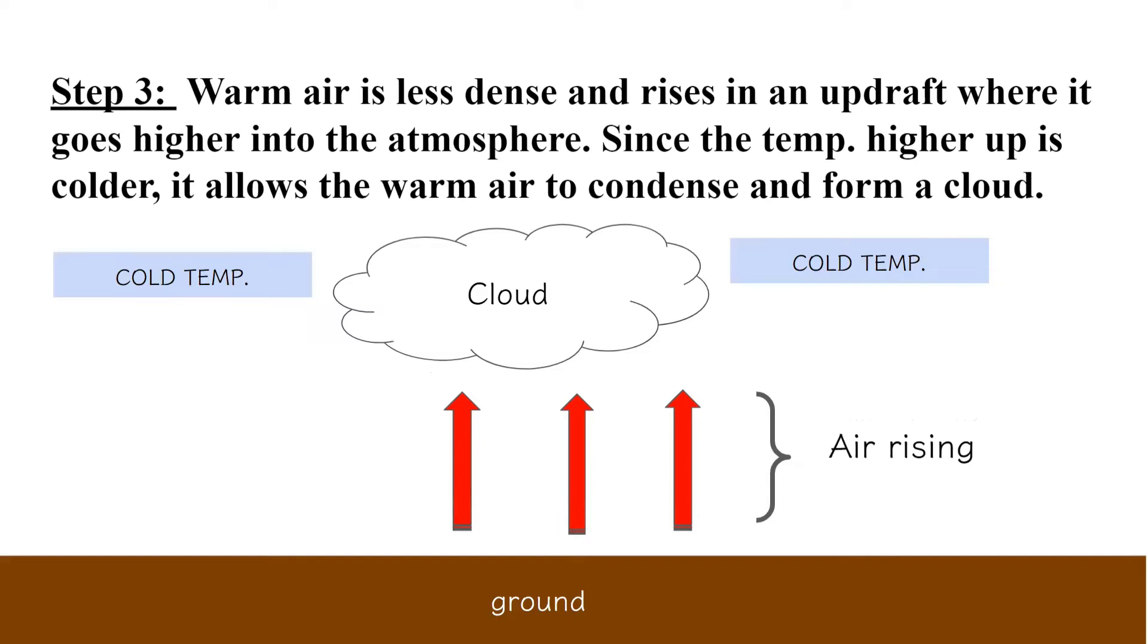So the air is rising, and because the temperature higher up is colder, it allows the gaseous warm air to change phase and condense, forming a cloud.